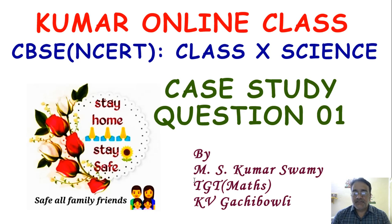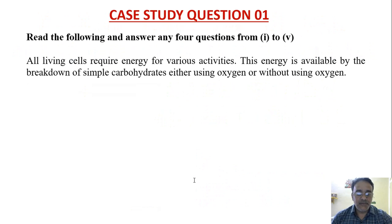Today we are going to start case study question number one. This is a CBSE sample paper case study question. The question gives a small part of context, and based on this, some questions are given. The first question states: all living cells require energy for various activities. This energy is available by the breakdown of simple carbohydrates, either using oxygen or without using oxygen.